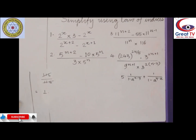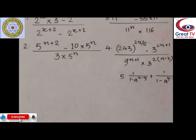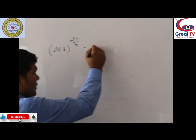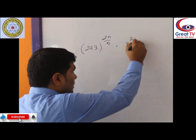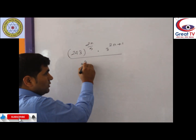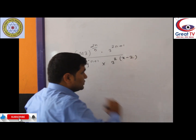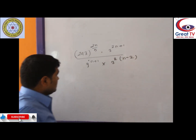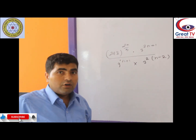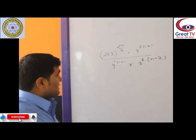Similarly, now question number 4: 243 to the power (2x/5) divided by 3 to the power (2x/5), times 3 to the power (2x/5); divided by 9 to the power (x+1) times 3 to the power (2x-2). Try to make the same base. When we use laws of indices, first try to make the same base for all terms. Here, connected by multiply signs, there are single terms in numerator and single terms in denominator.